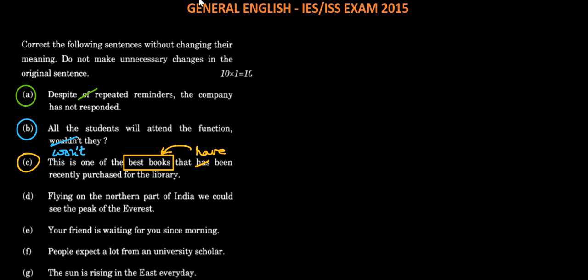Next one: Flying on the northern part of India, we could see the peak of the Everest. On is not correct, it would be in. Flying in the northern part of India, we could see the peak of the Everest. Next: Your friend is waiting for you since morning. Whenever the time is indicated that someone is waiting for you since morning, it cannot be is waiting. It would be has been. Your friend has been waiting for you since morning.